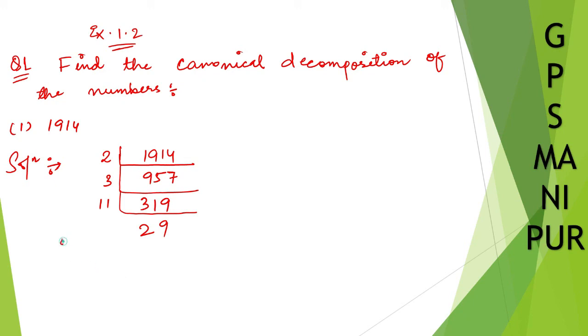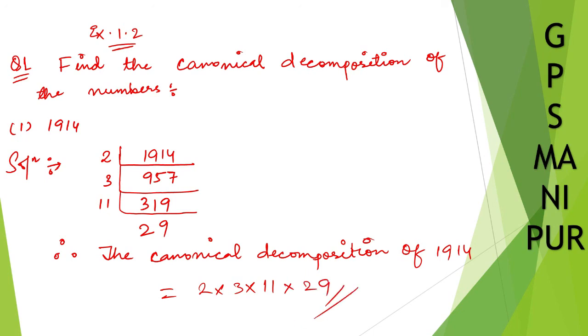Therefore, we can write the canonical decomposition of 1914 is equal to 2 times 3 times 11 times 29. That's all.